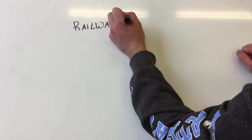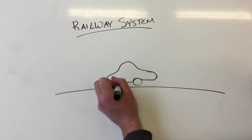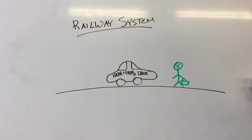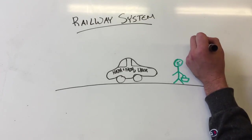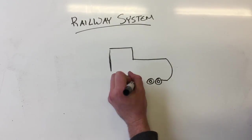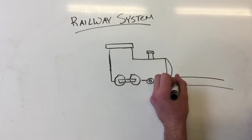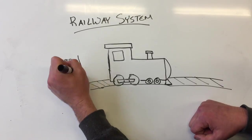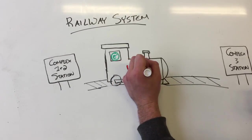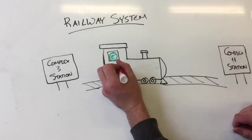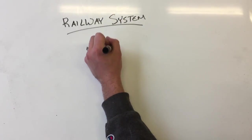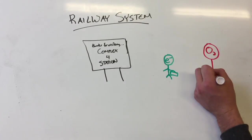A good way to visualize the electron transport chain is to imagine it as a railway system. FADH2 and NADH are the Ubers dropping off the passengers — the electrons — at the train station, complexes 1 and 2. The first train, ubiquinone, takes the passenger electrons from the first station, complexes 1 and 2, to the second station, complex 3. The electron passengers then change trains onto cytochrome C, which takes them to their final destination, complex 4. The electrons leave the station and arrive at their final destination: an oxygen molecule.